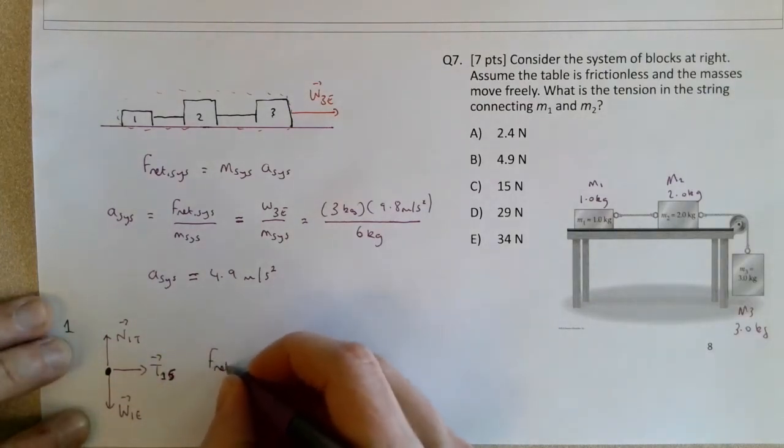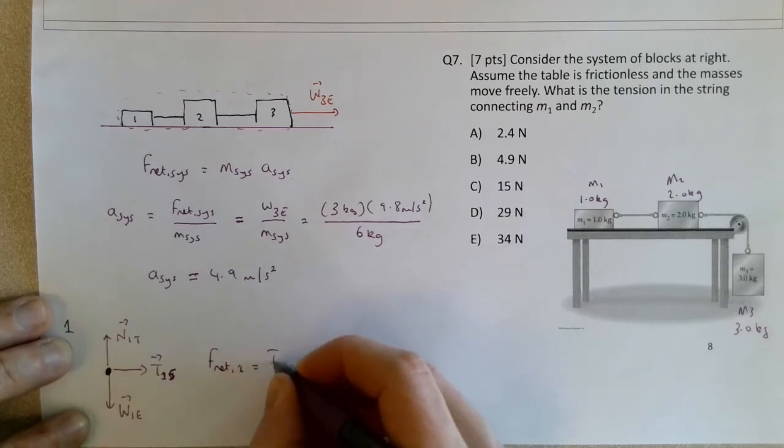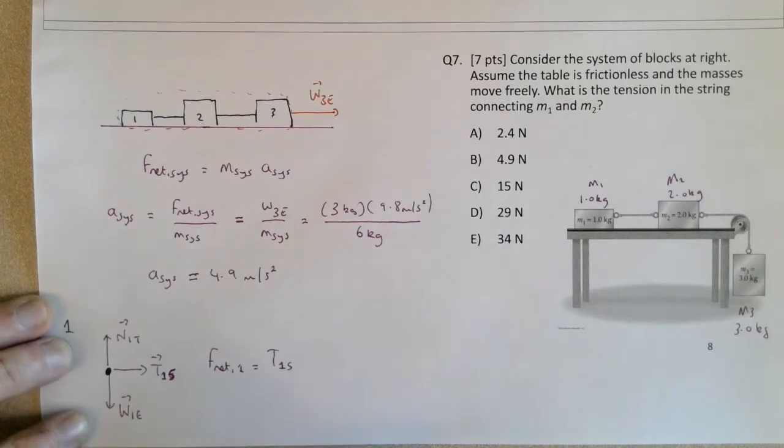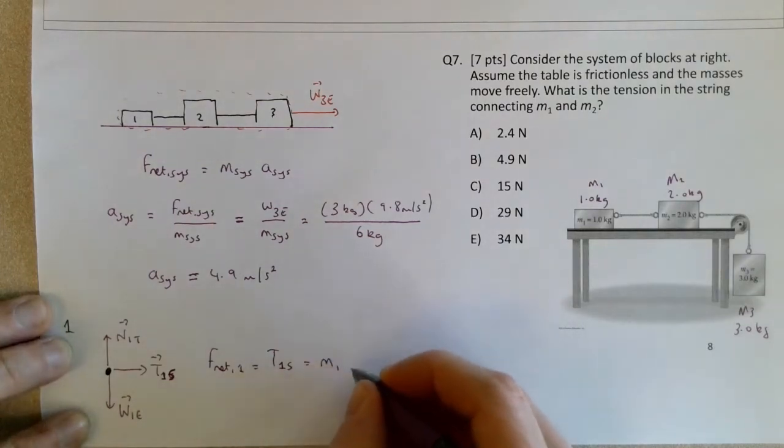So F net 1 is equal to tension 1 by the string, because these two forces sum to 0. And this is equal to the mass of 1 times A.